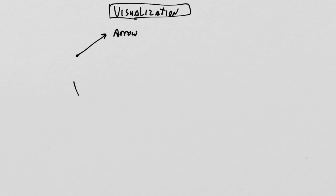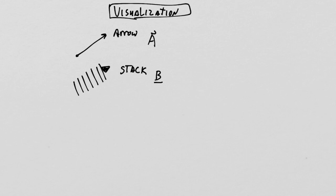We're continuing our discussion of visualization. We left off by defining the idea of an arrow and the idea of a stack. If this arrow is A and this stack is B, we defined A dot B to be a real number.